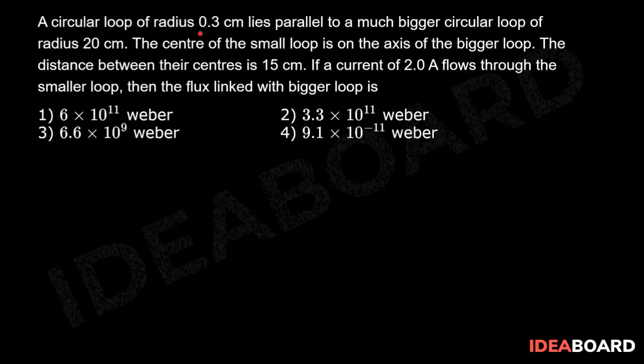A circular loop of radius 0.3 cm lies parallel to a much bigger circular loop of radius 20 cm. The center of the small loop is on the axis of the bigger loop. The distance between their centers is 15 cm. If a current of 2 ampere flows through the smaller loop, then the flux linked with the bigger loop is.